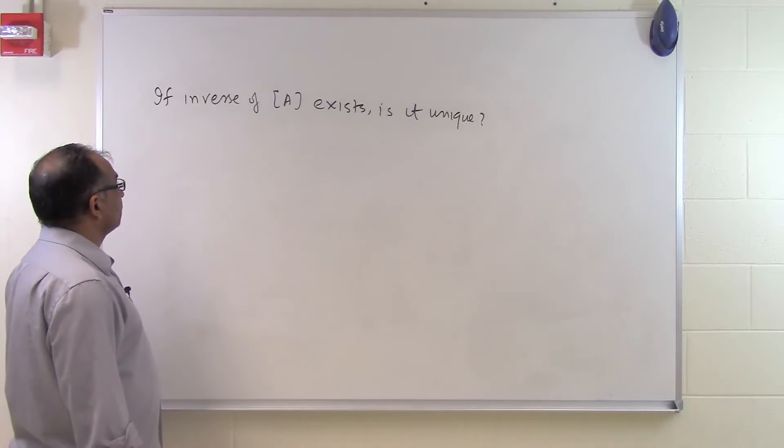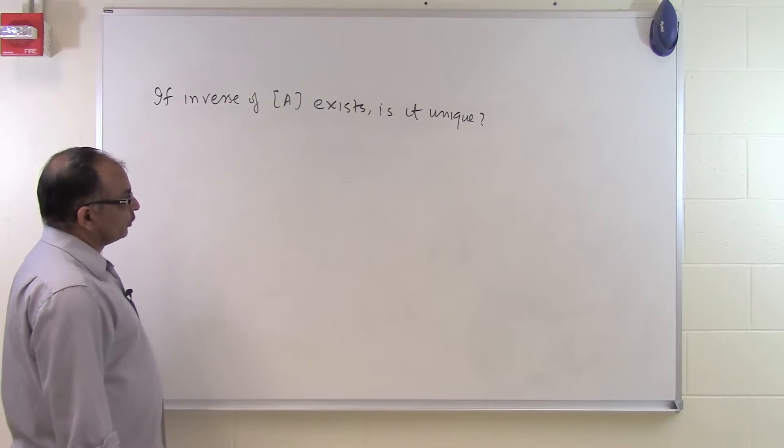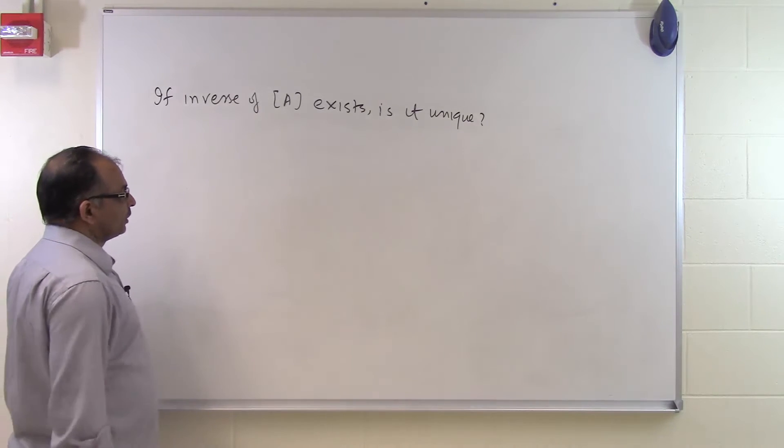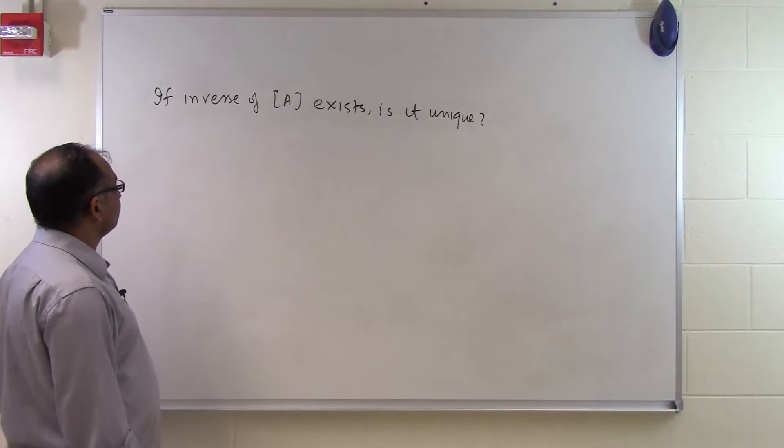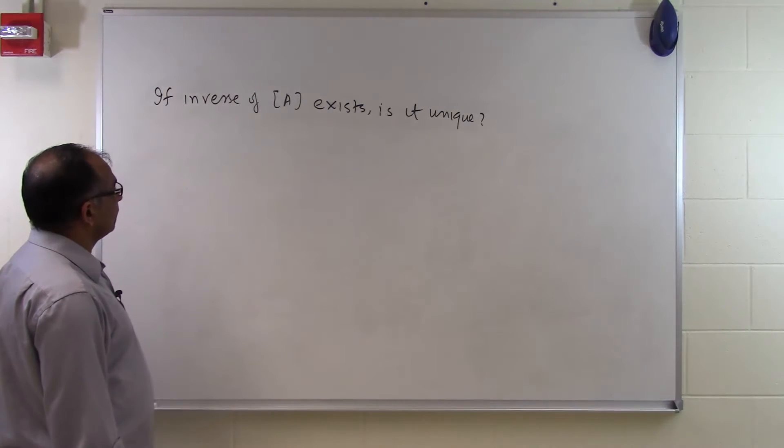In this segment we will try to prove that if the inverse of A exists, it is unique. Although I have posed a question, is it unique? Yes, it is unique, but we need to now prove that the inverse of A matrix, if it exists, is unique.